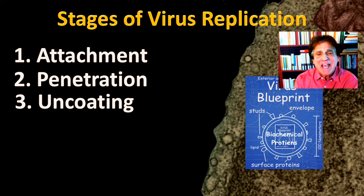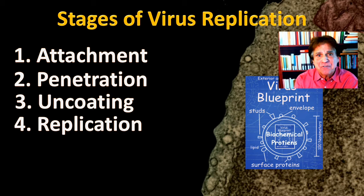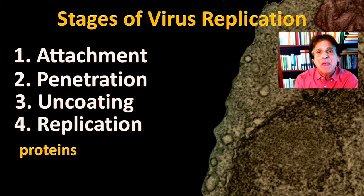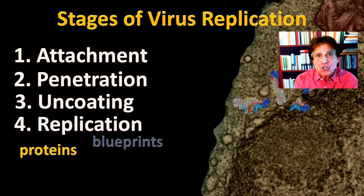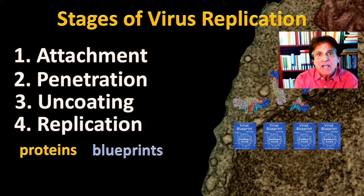The next stage is called replication, and that is when the blueprints of that virus are used by the cell's ribosomes, the protein factories, to make more proteins. Some of these proteins will help in the duplication of the virus blueprints. So now we will have both proteins and new virus blueprints available to make new virus particles.